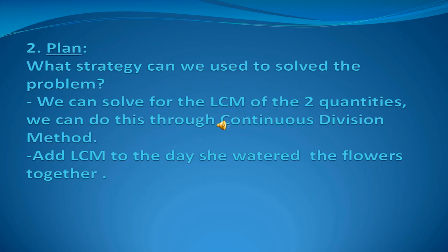The second step in solving the word problem is to Plan or decide on a solution. In this method, we are going to search for the best strategy to solve the problem. The question is: what strategy can we use? The answer is: we can solve for the LCM of the 2 quantities. We can do this through the continuous division method. Next, we are going to add the LCM or the least common multiple to the day she watered the flowers together.